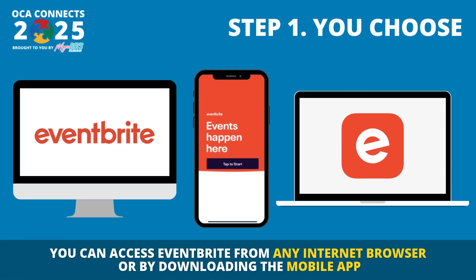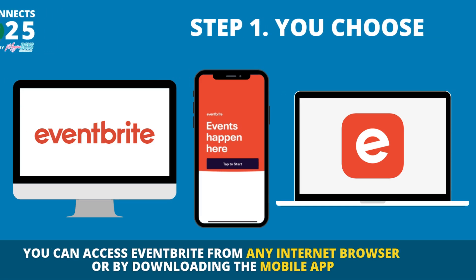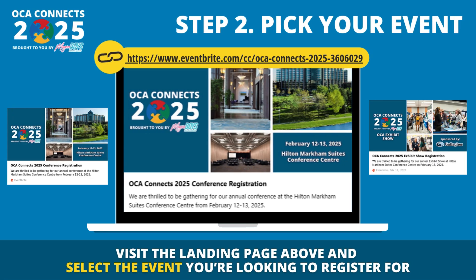Step one: choose your device. You can access Eventbrite from any internet browser or by downloading their mobile app. Whether using your mobile phone or computer to register, simply search Eventbrite into your Google search bar or App Store. Our event registration links are also available right on our website — visit the link on your screen and select the appropriate event for you.